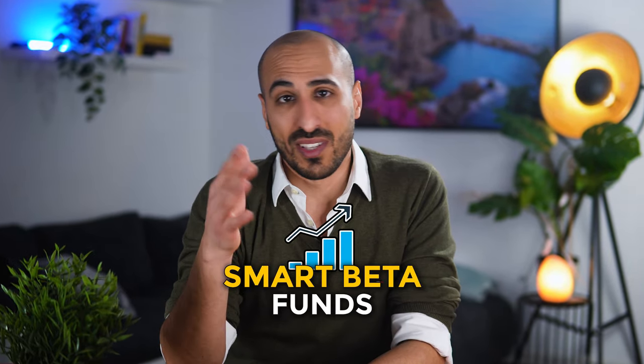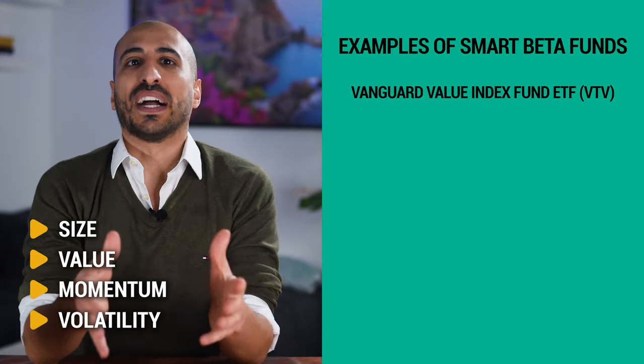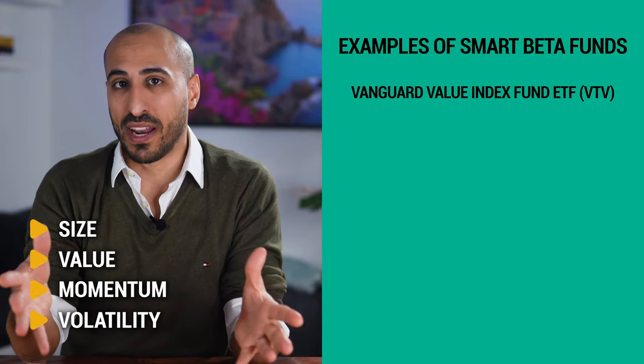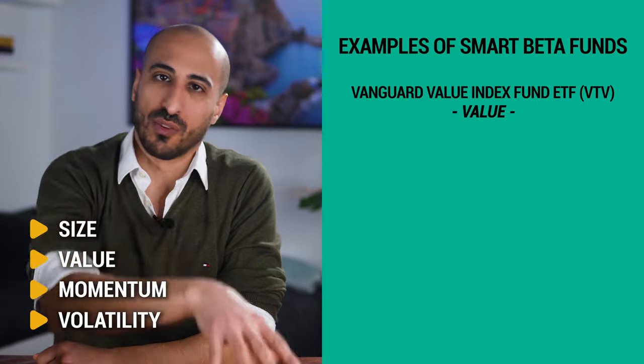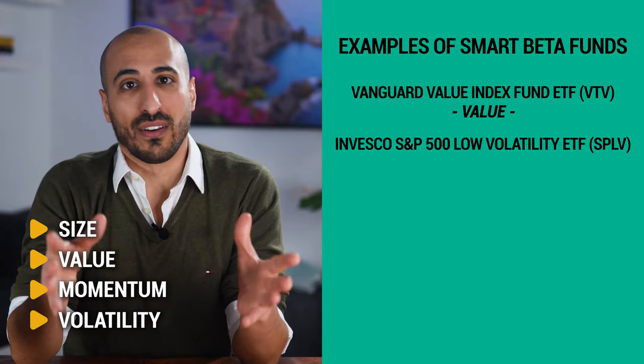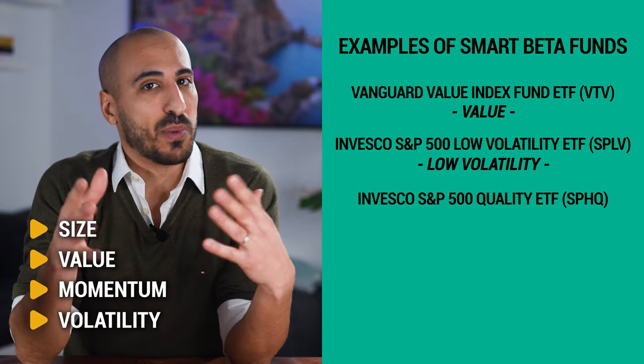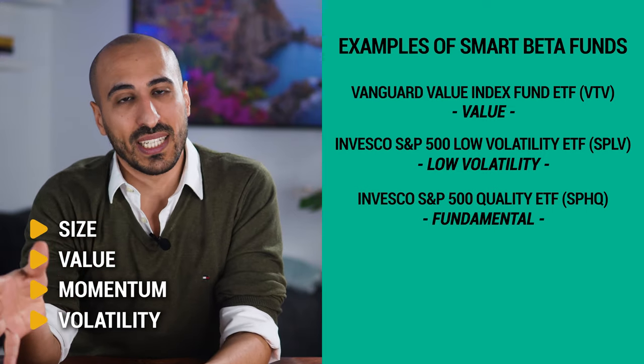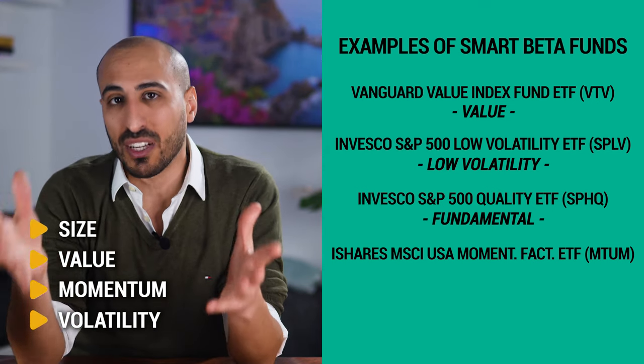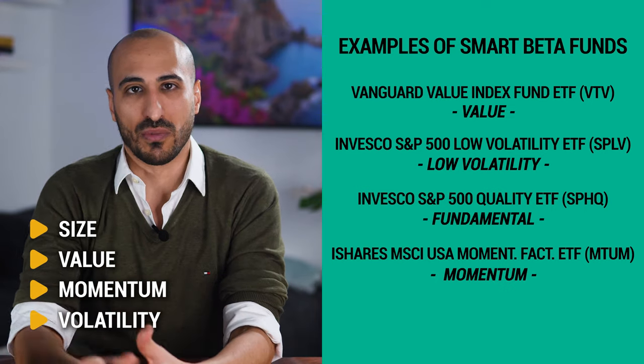Over the last 10-15 years, asset managers like Vanguard and BlackRock have been creating so-called smart beta funds. Smart beta is a catch-all term for strategies that aim to deliver better risk-adjusted returns than traditional market-cap-weighted indexes — usually a blend of passive and active investing that adjusts holdings based on factors such as size, value, momentum, and volatility. Examples include the Vanguard Value Index Fund ETF (VTV), the Invesco S&P 500 Low Volatility ETF (SPLV), the Invesco S&P 500 Quality ETF (SPHQ), and the iShares MSCI USA Momentum Factor ETF (MTUM).